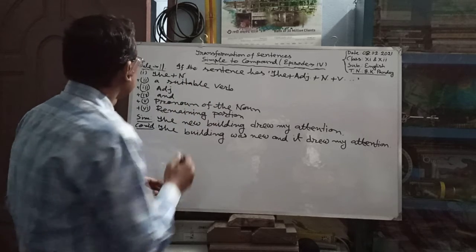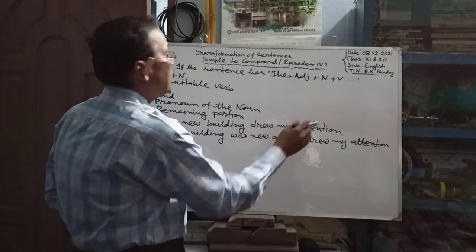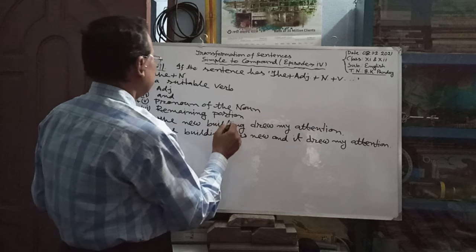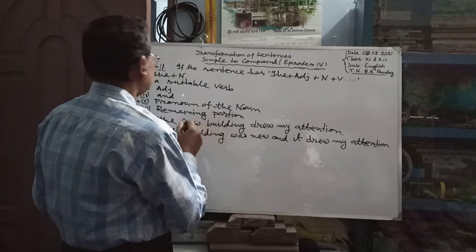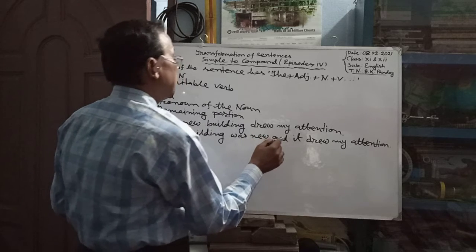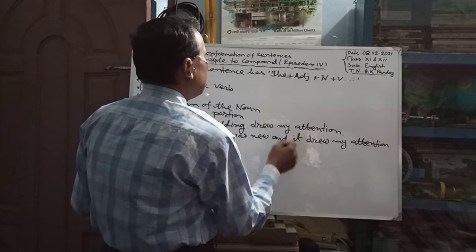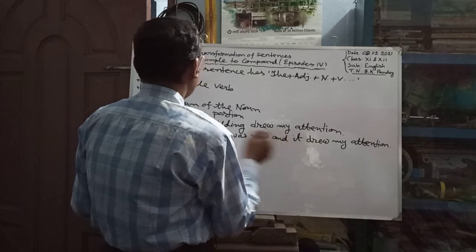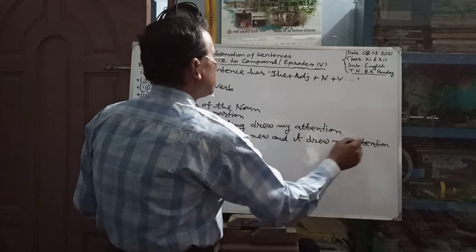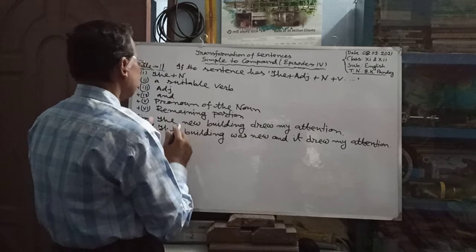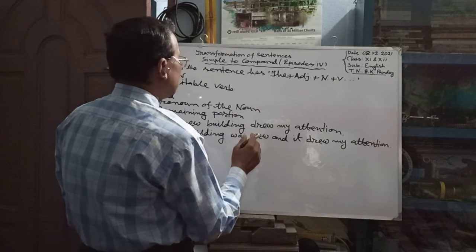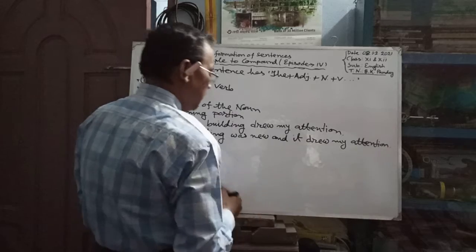For example: 'The new building drew my attention.' Here, 'the' plus 'building', then a suitable verb 'was', then the adjective 'new', then 'and', then the pronoun of 'the building' which is 'it', then the remaining portion 'drew my attention'. So this sentence becomes: 'The building was new and it drew my attention.'